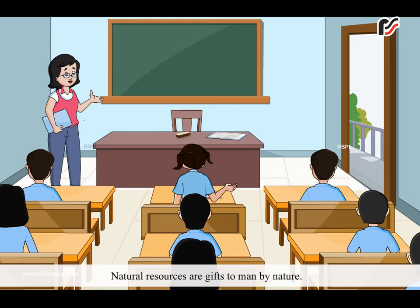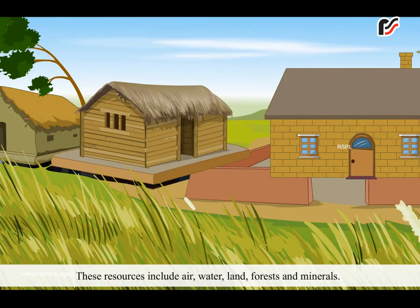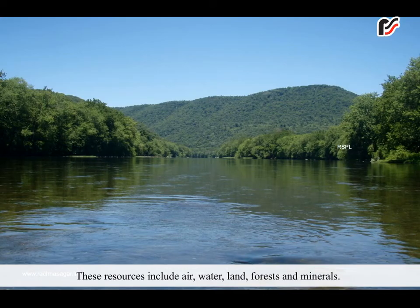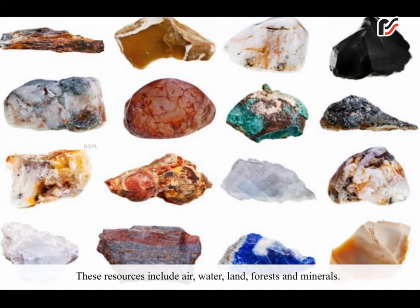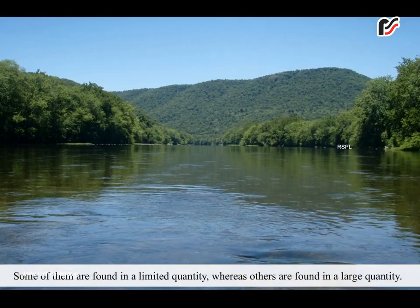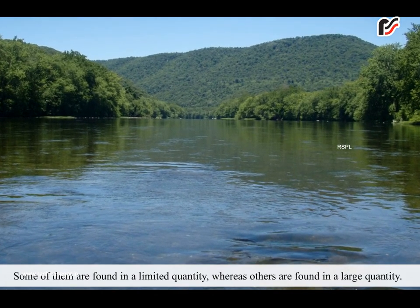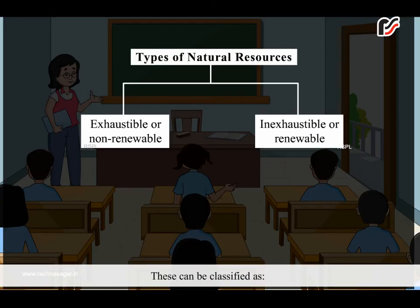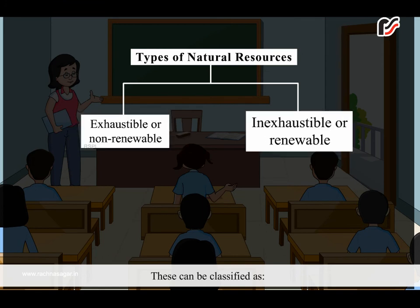Natural resources are gifts to man by nature. These resources include air, water, land, forests and minerals. Some of them are found in a limited quantity, whereas others are found in a large quantity. These can be classified as: 1. Exhaustible or non-renewable, and 2. Inexhaustible or renewable.